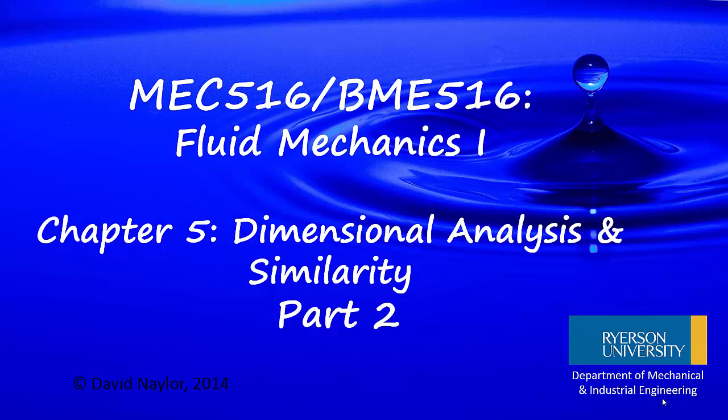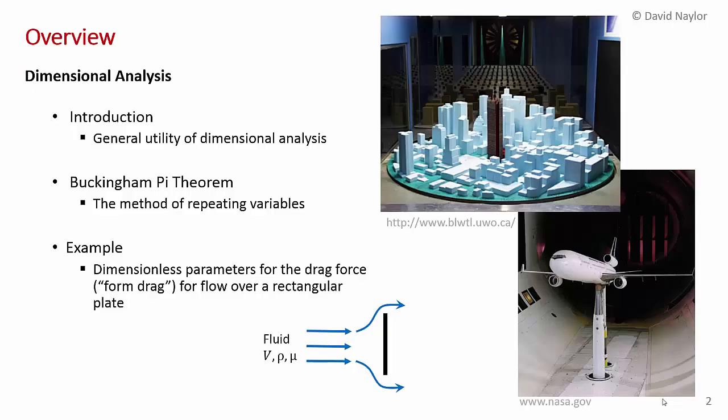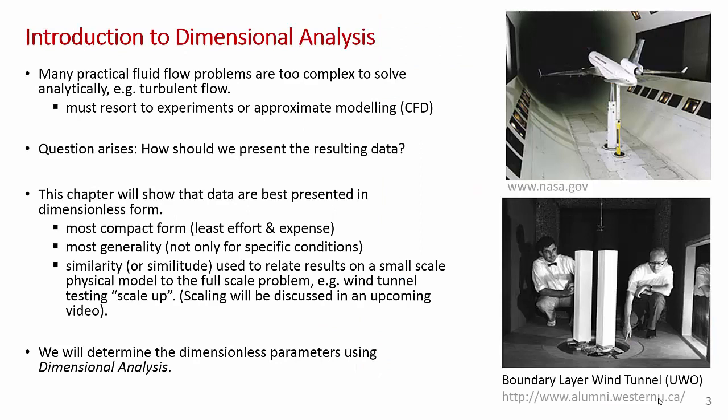This is Chapter 5, Dimensional Analysis and Similarity, Part 2. In this video I'll be discussing the procedure of dimensional analysis. I'll start with an introduction to the general utility of dimensional analysis for things like extracting data from small wind tunnel models. Then I'll go through the detailed mathematics of the Buckingham Pi theorem — the procedure for determining the dimensionless parameters for a problem — using the method of repeating variables. And then I'll end the video with an example.